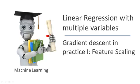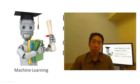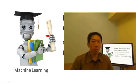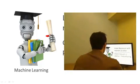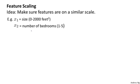In this video and in the video after this one, I want to tell you about some of the practical tricks for making gradient descent work well. In this video, I want to tell you about an idea called feature scaling. Here's the idea: if you have a problem where you have multiple features, if you make sure that the features are on a similar scale, by which I mean make sure that the different features take on similar ranges of values, then gradient descent can converge more quickly.